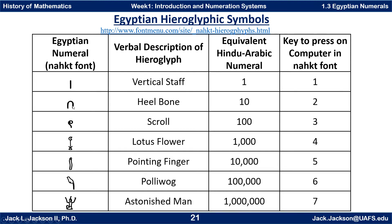That's a vertical staff, supposed to represent a heel bone, a scroll, a lotus flower, a pointing finger, a pollywog, an astonished man. And here's the equivalent modern Hindu-Arabic numeral for each.